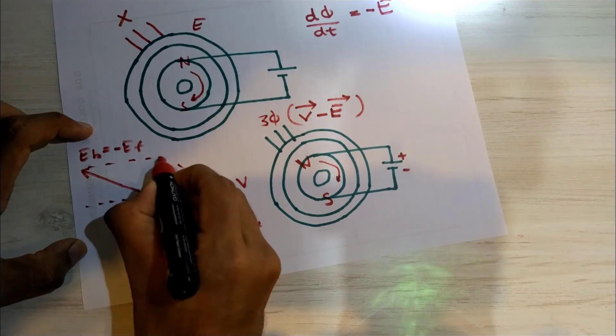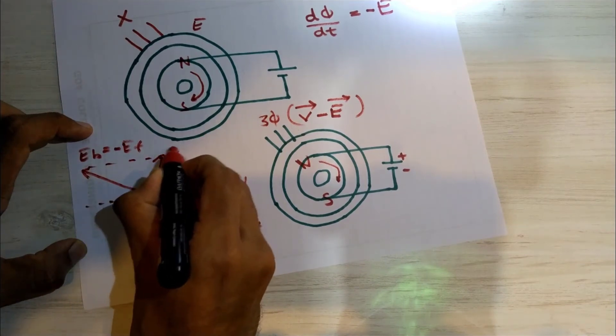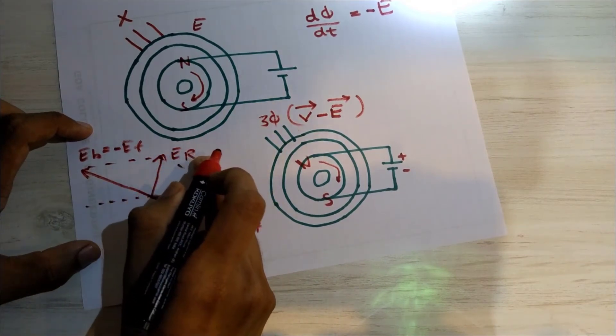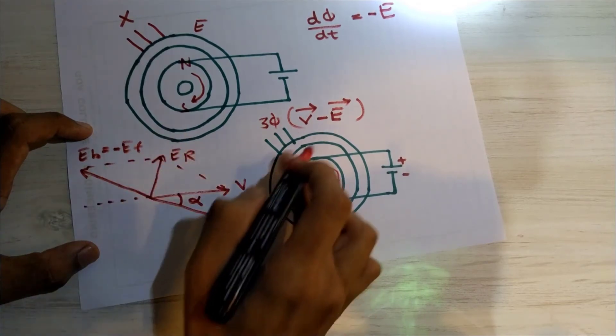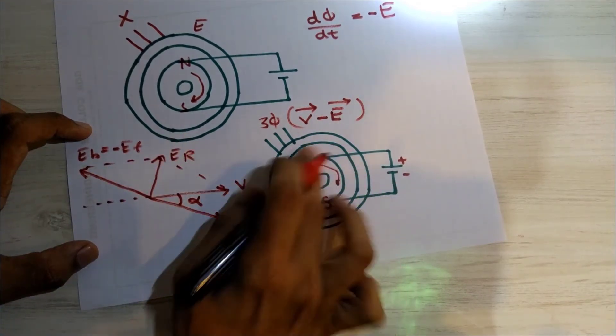The resultant of both will give rise to our resultant voltage. This resultant voltage is responsible for producing the air gap field.